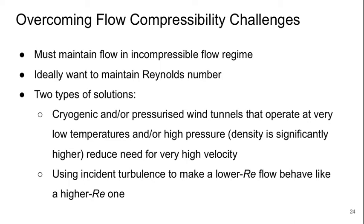So, how do we overcome these flow compressibility challenges? We need to maintain the flow in the incompressible regime. Ideally, we want to maintain the Reynolds number too. There's two types of solutions here. The first is cryogenic and or pressurized wind tunnels. These operate at low temperatures and or high pressures to achieve significantly higher density and therefore reduce the need for very high velocities. The other approach is to use incident turbulence to make a lower Reynolds number flow effectively behave like a higher Reynolds number one.